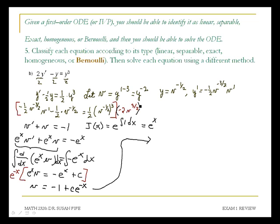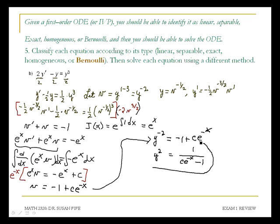And then we'll get back in terms of y. V is equal to y to the negative second. So I get y to the negative second is equal to negative 1 plus c e to the negative x. Now, here I'm going to solve for y — I'm going to take the reciprocal first, and that'll give me the reciprocal of the right side, bringing these terms down to the denominator. And then to solve for y, we actually get two solutions, so we probably don't want to go that way. So let's leave it as y squared equals 1 over c e to the negative x minus 1.